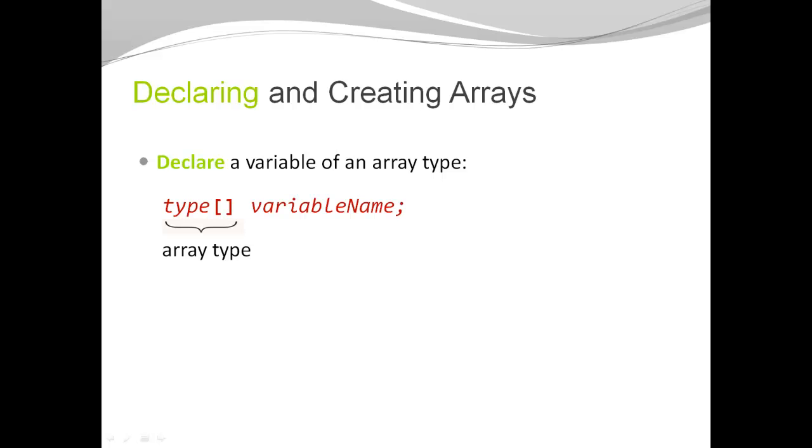You might notice that the word type and variable name are in italic and the reason is because type and variable name have to be substituted with the actual type and the actual variable name. So let's look at some examples.